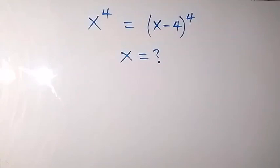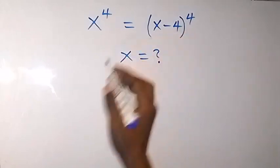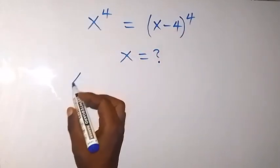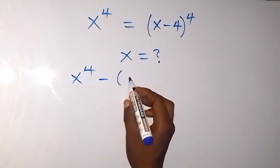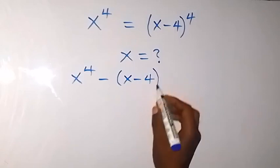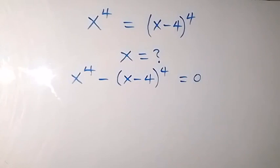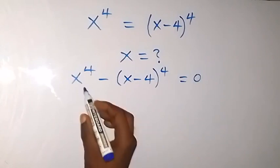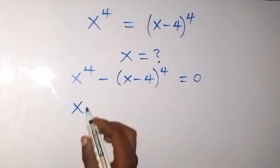Hello, you're welcome. Here we solve for x in this exponent problem. Let's take this side to that side and write it as x raised to power 4 minus (x minus 4) raised to power 4 equals 0. Now let's factor a power of 2 out and we have x squared.